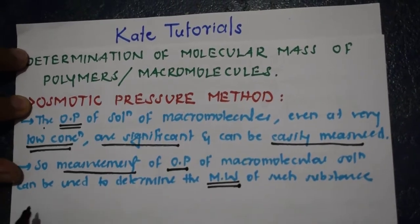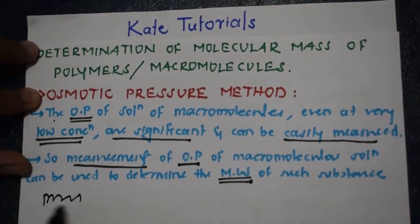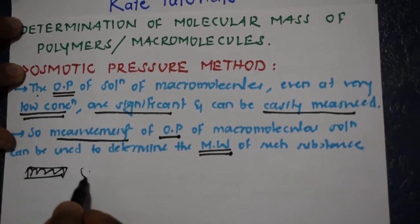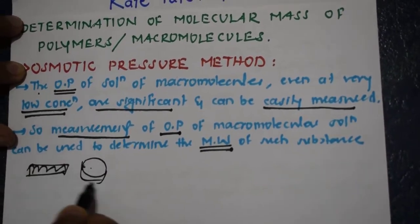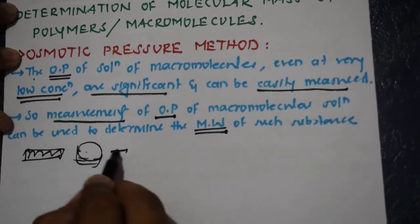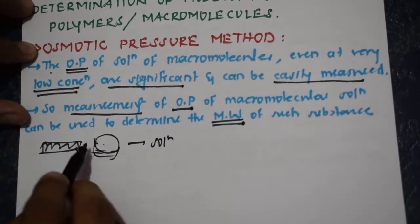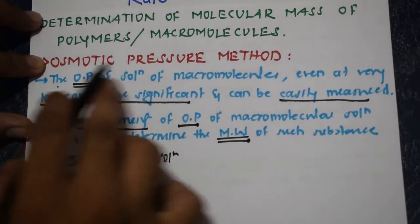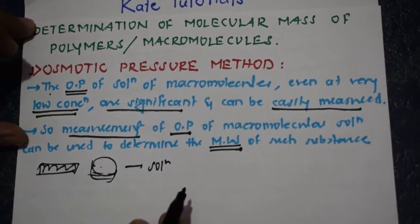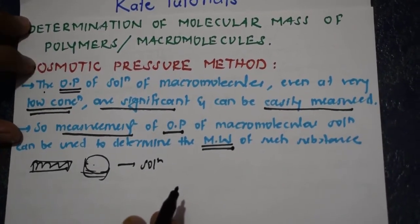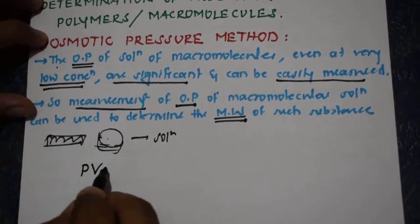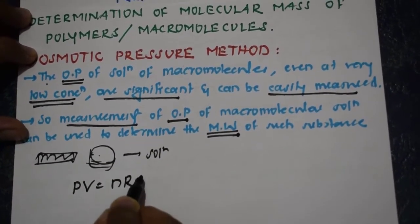Here, we are going to take a polymer, dissolve it in a solution, and once we prepare the solution of this polymer, we are going to subject it to osmotic pressure. We determine its osmotic pressure and we know that PV is equal to nRT.